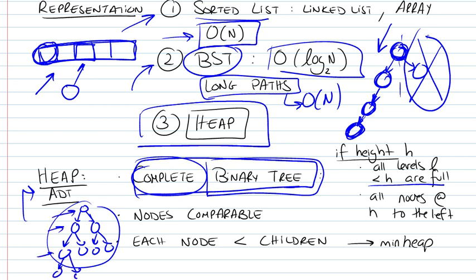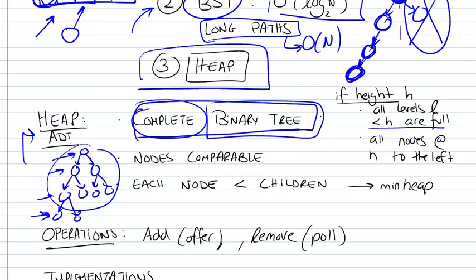This would qualify as a complete binary tree, because all of the levels are full, except we might have some elements at the very last level. But in this case, if we're talking about the last level, the condition is that all the nodes are pushed to the left. So we can't have a node right here. This won't qualify as a complete binary tree. We must have all of the nodes pushed to the left. All the levels are full, except for the last one, where all of the nodes on the last level are pushed to the left.